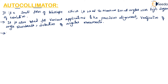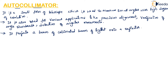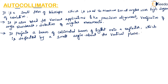This auto collimator projects a beam of collimated light onto a reflector, which is deflected by a small angle about the vertical plane. It will first collimate the light and project it onto a reflector. After it is projected on the reflector, the light will be deflected by a small angle about the vertical plane. The deflection between the beam and the reflected beam is the measure of the angular tilt of the reflector.